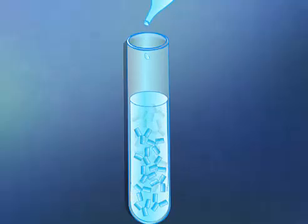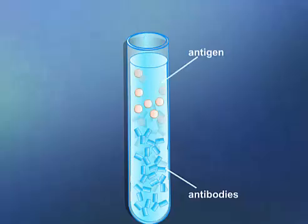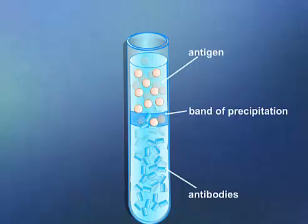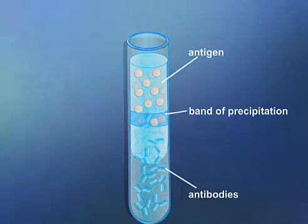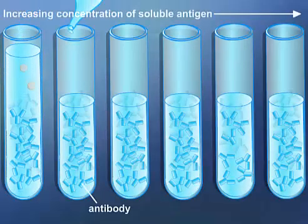When soluble antigens, such as proteins, react with soluble antibodies, they form a precipitate. If the antigen solution is layered on top of the antibody solution in a test tube, a precipitation ring forms in the area where the two solutions make contact.